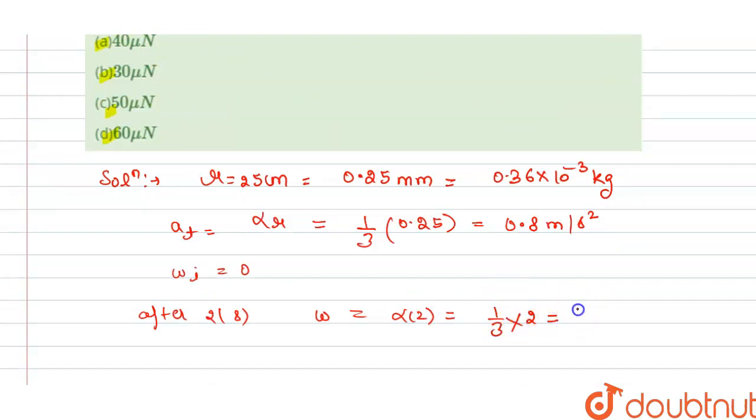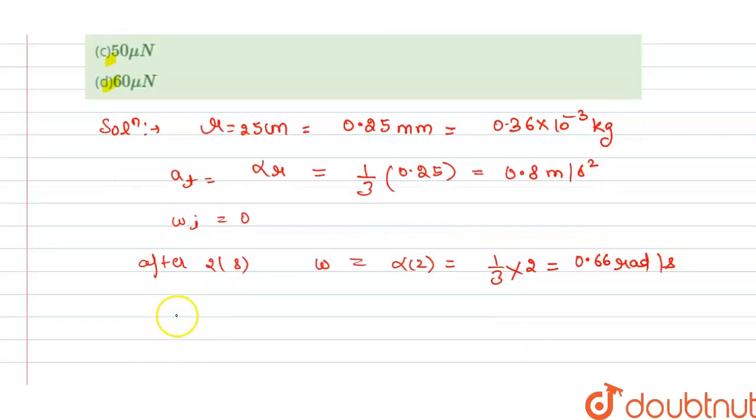And we have the centripetal acceleration ac, that is r into omega square. So this is 0.25 in multiplication with 0.66 whole square, so on solving this we get 0.109 meter per second square.